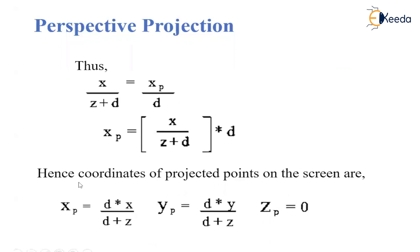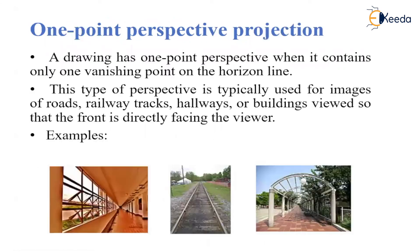Thus we get the coordinates of the projected points on the screen or view plane — the values of XP and YP. These are the coordinates of the image projected onto the view plane, and the Z coordinate will be 0 because it is a two-dimensional image displayed on the view plane.